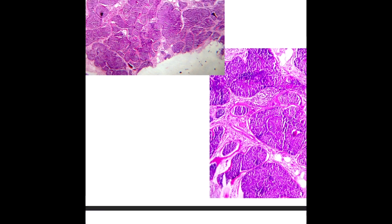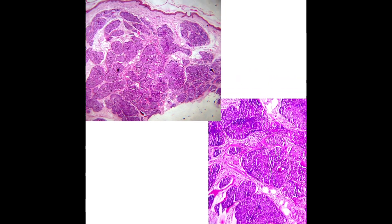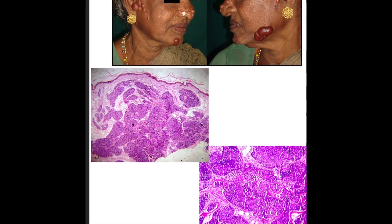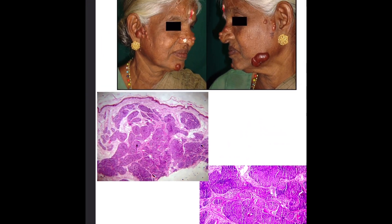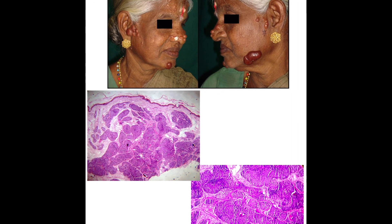Now let us discuss the case. Cylindroma is a benign cutaneous adnexal tumor that most often affects the scalp, with a strong predilection for middle-aged and elderly females. It most often occurs as a solitary tumor. The rate of growth is slow, and tumors tend to stop growing after reaching a certain size. They are generally asymptomatic, but occasionally a patient may have pain.